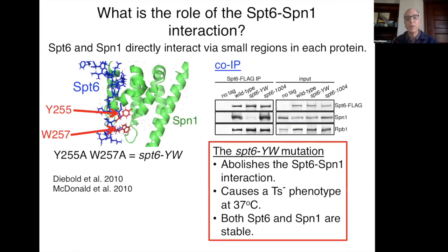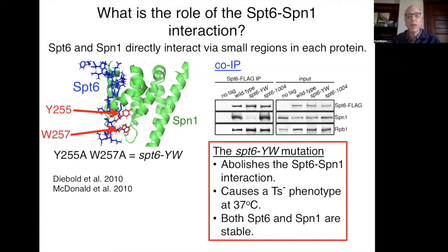So the SPT6-YW mutation abolishes this interaction. It also causes a temperature-sensitive phenotype at 37°C, and both proteins remain stable. That gives us the opportunity to study the consequence of losing this interaction while both proteins are still present.